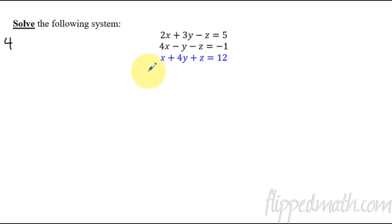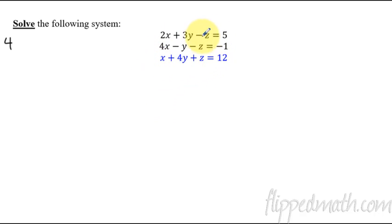There are a lot of ways you could approach this, so the way I'm going to show you is not the only way. There are some strategies though. As I look at this, I need to make one of the variables cancel — I need to get the y's to disappear, the x's to disappear, or the z's. One of those needs to happen.